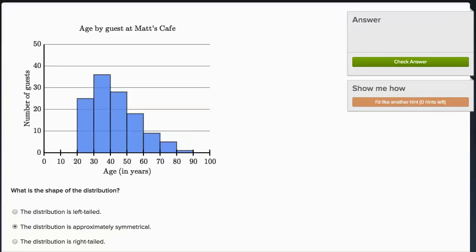So what I want to talk about now are shapes of distributions and different words we might use to describe those shapes. Right over here we're talking about Matt's Cafe and we have different age buckets. So this is a histogram here.